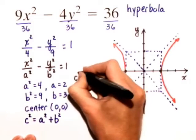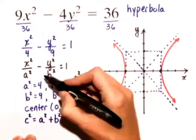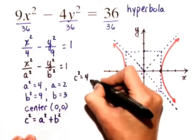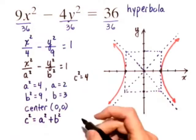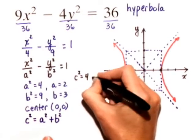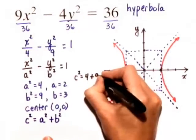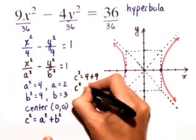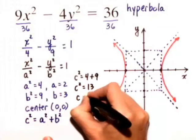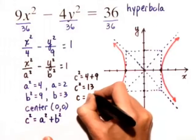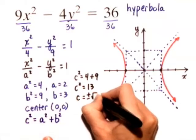So, we have c squared is equal to a squared, which is 4, plus b squared, which is 9. So, c squared is equal to 13. Therefore, c is equal to plus or minus the square root of 13.